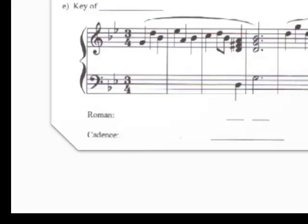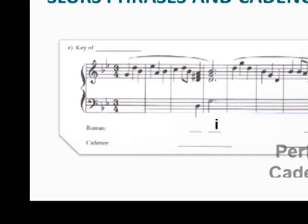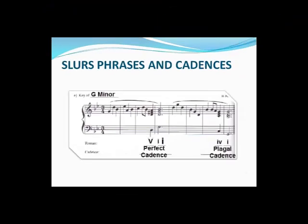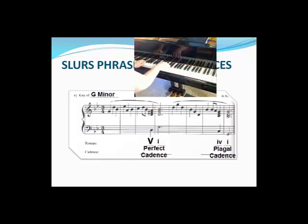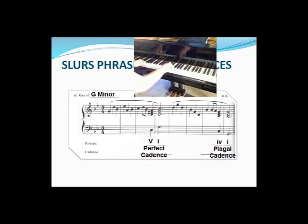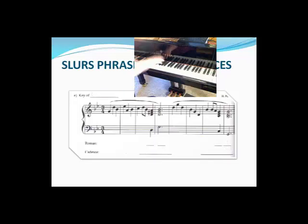Let's see if you solved this correctly. The dotted half note chord is G minor — that's a I chord. The chord before it is a D major chord, which is a V chord in G minor. That makes this a perfect cadence. Let me play the entire passage for you. Because this is in a minor key, the I and the IV chords are written in lowercase Roman numerals.